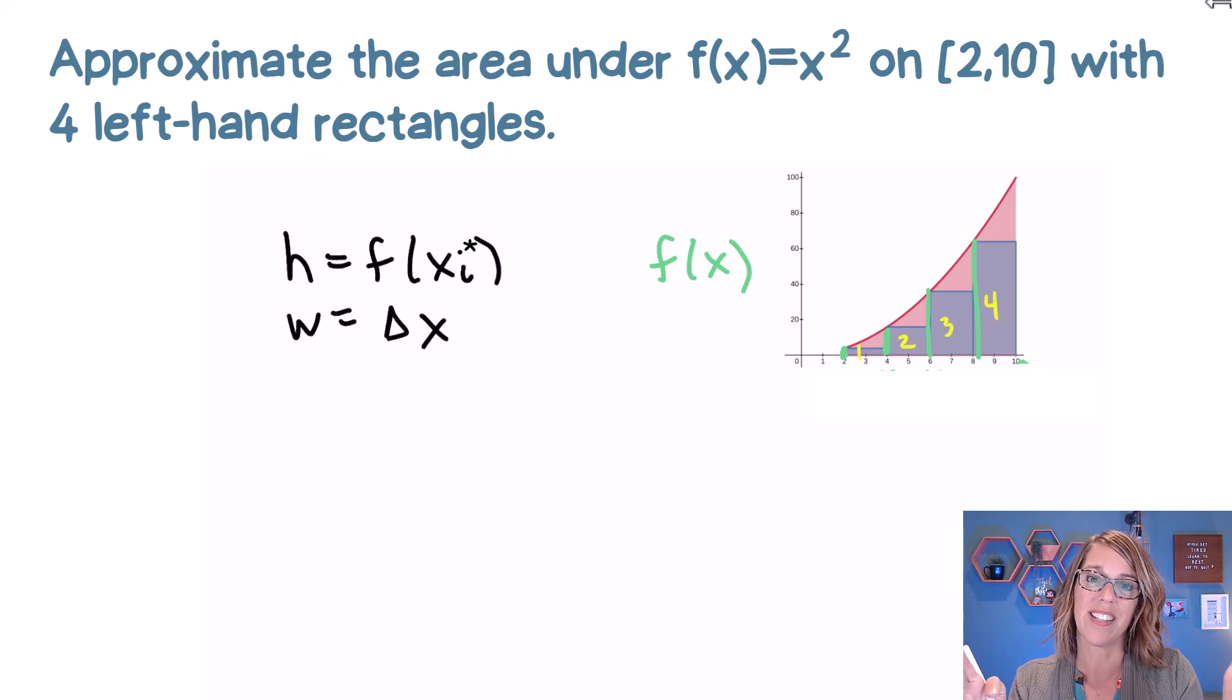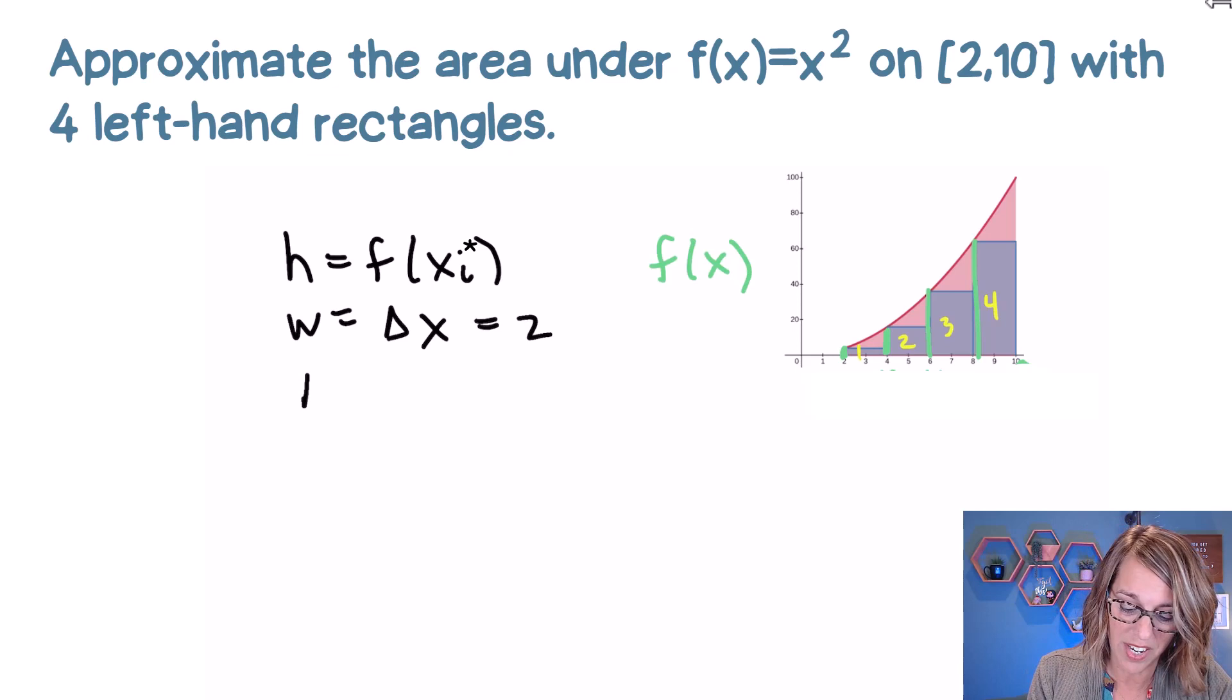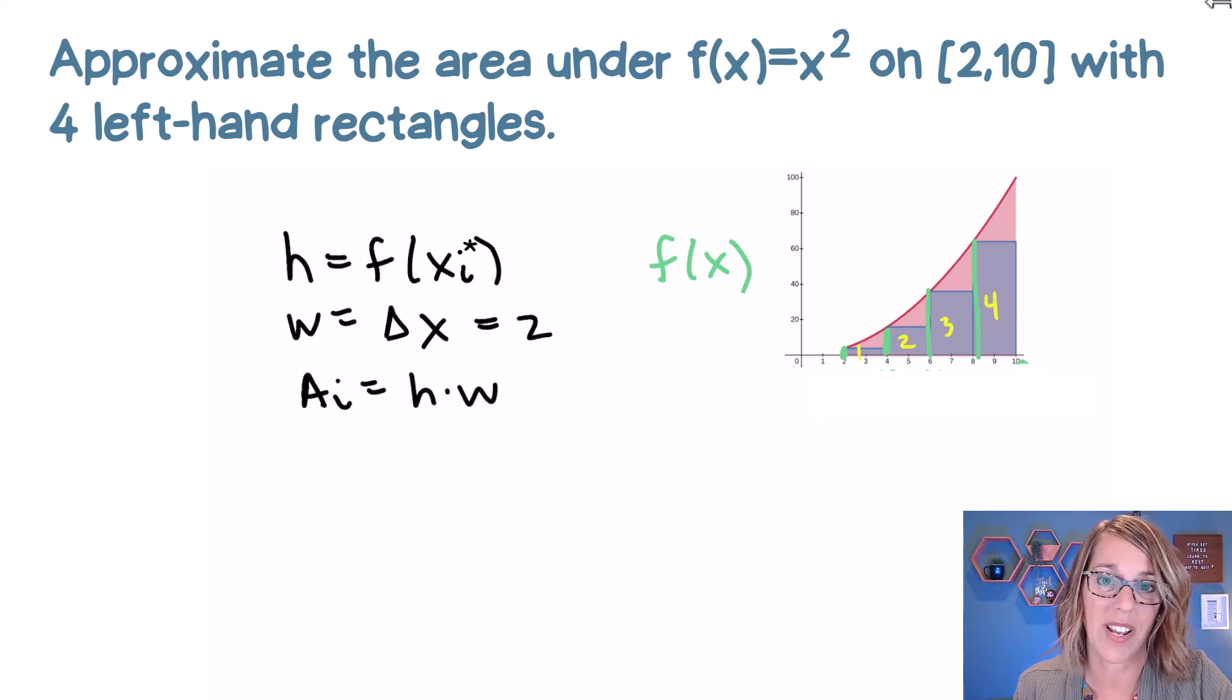It's going to be that interval width divided up into the number of rectangles. In this case, it happens to be two. But what we're really doing here is taking the area of each of these rectangles, and it's just going to be a height times a width.